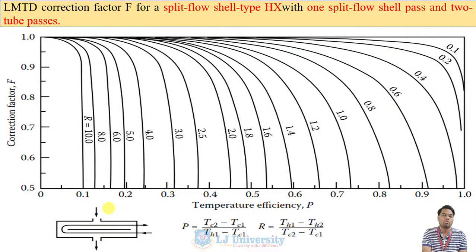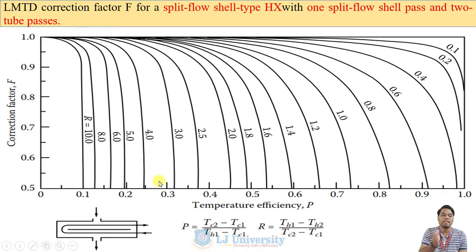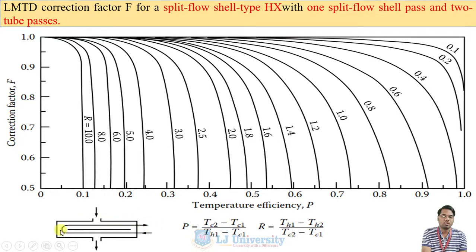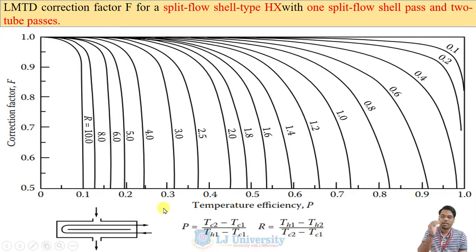Another flow arrangement is the split flow type, where there is a divider within the shell creating a split between passes. This is known as the split-flow shell-type heat exchanger. For one split-flow shell pass with two tube passes, a corresponding correction factor chart is available.